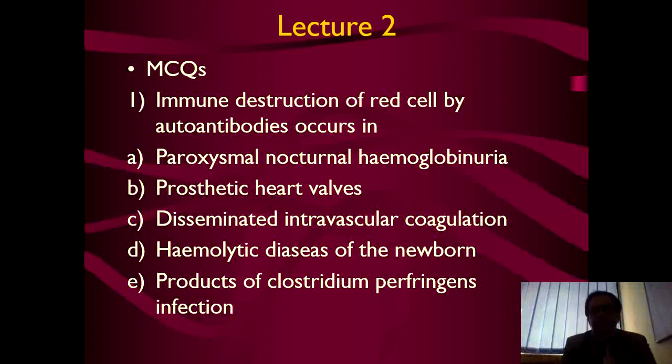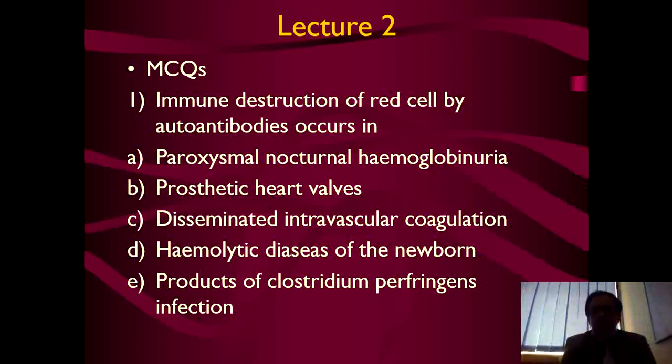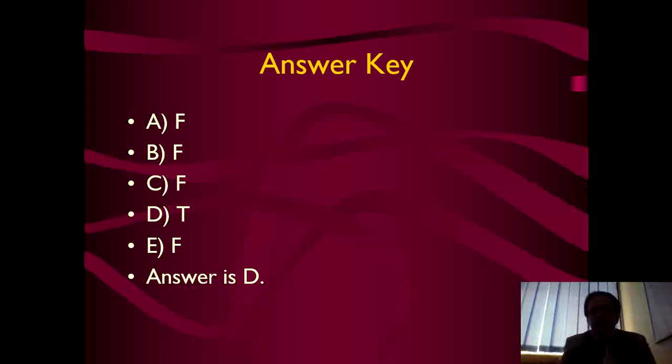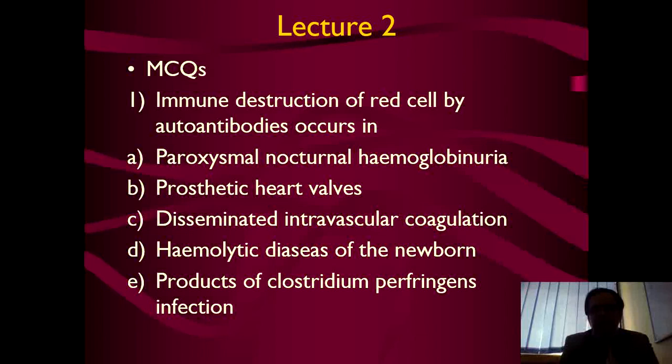The MCQ is: the immune destruction of red cells by antibodies occurs in which of the following conditions? Option A: paroxysmal nocturnal hemoglobinuria. Option B: prosthetic heart valves. Option C: disseminated intravascular coagulation. Option D: hemolytic disease of the newborn. Option E: products of Clostridium perfringens infection. The correct answer is Option D — hemolytic disease of the newborn.